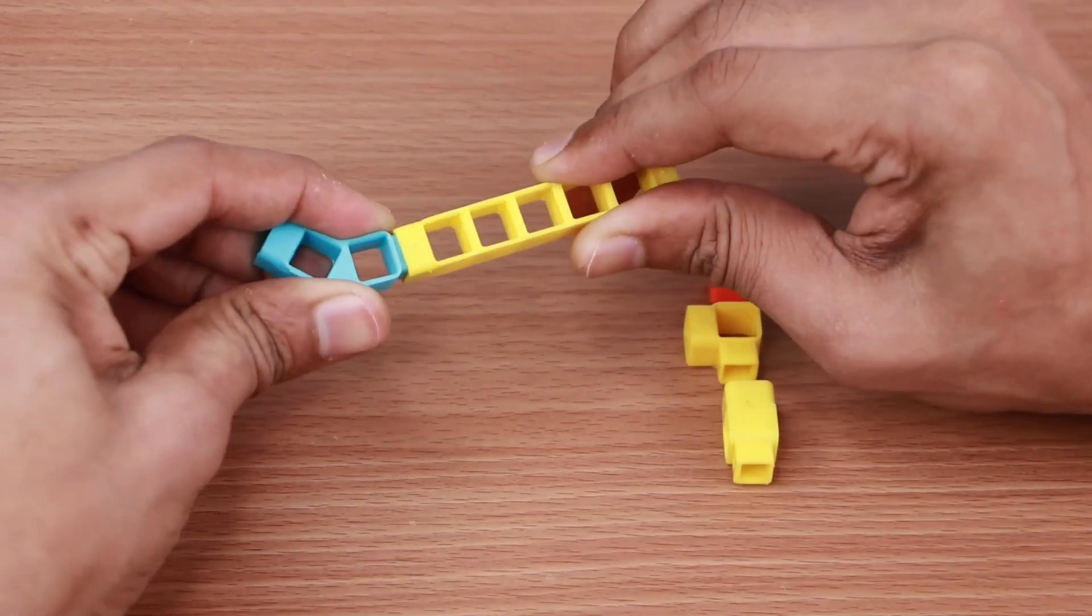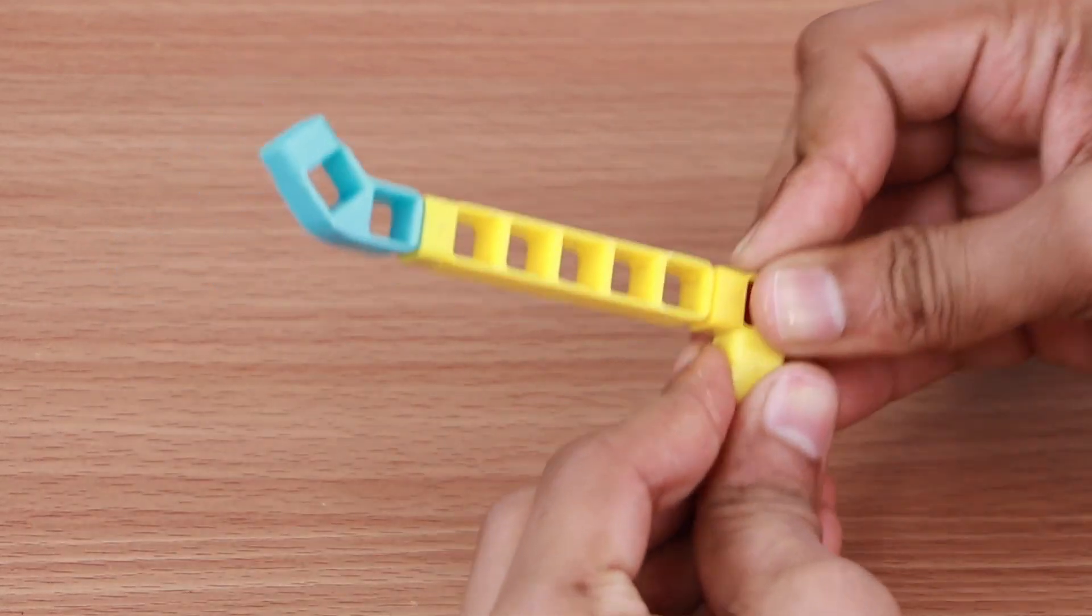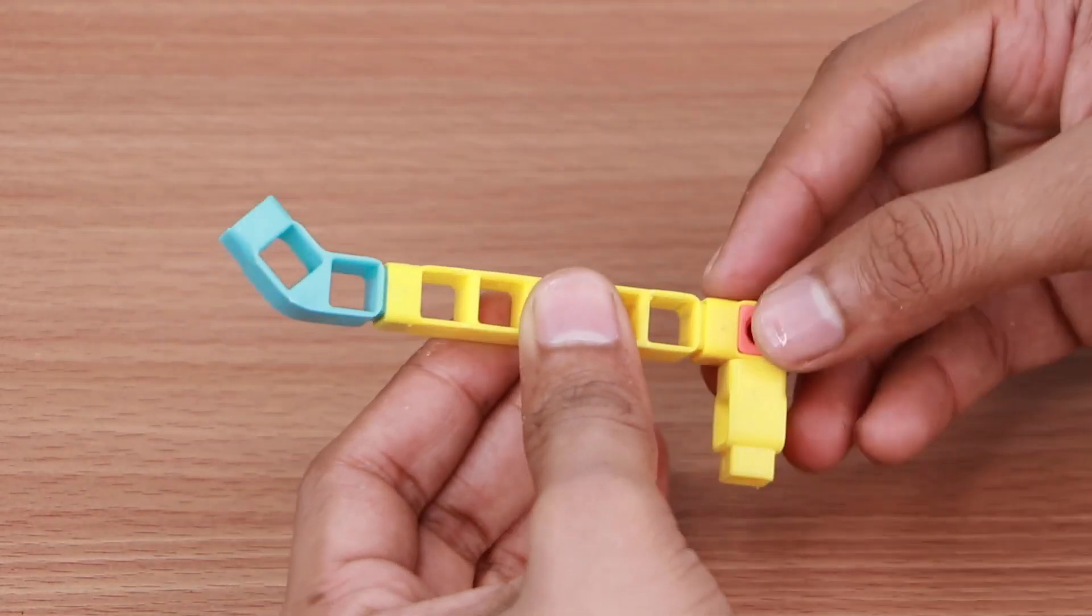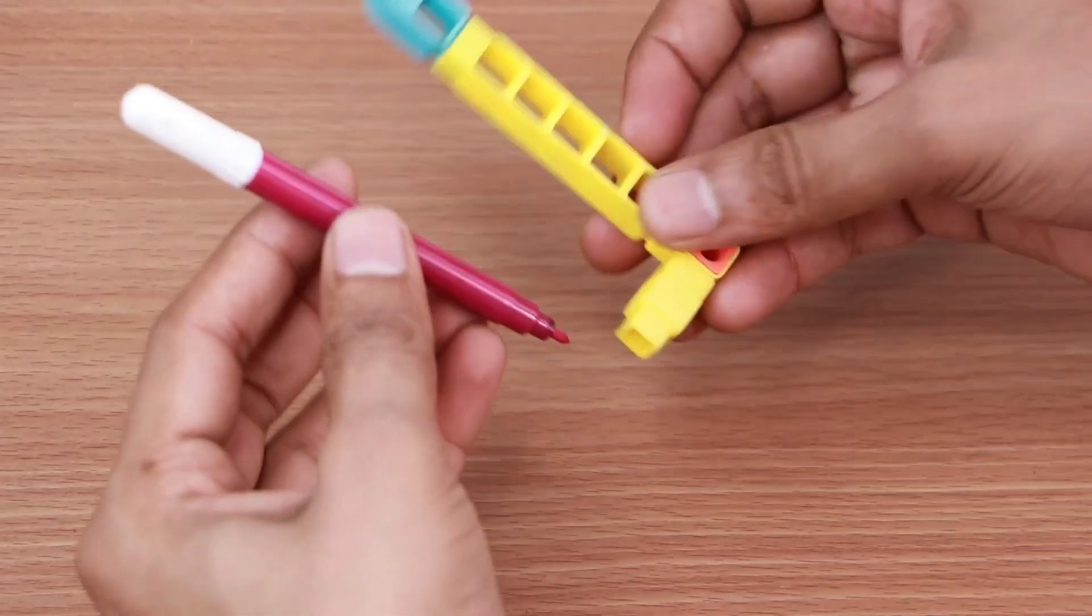Now for the pen assembly, take one two-hole elbow, one five-hole beam, one one-hole elbow, one one-hole beam and one male axle coupler and join them together. Take a sketch pen and attach it to this structure.